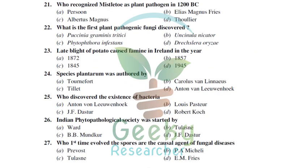Albertus Magnus, a church priest around 1200 BC, first recognized mistletoe as a plant pathogen — the world's first recognized plant pathogen. Mistletoe is otherwise called dendrophthoe or giant mistletoe.